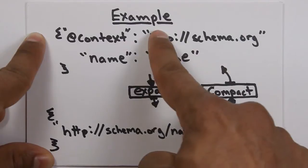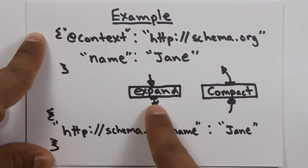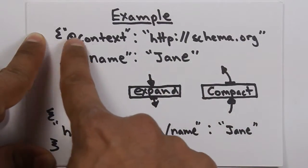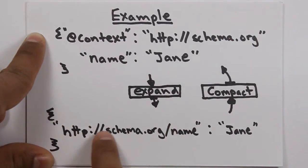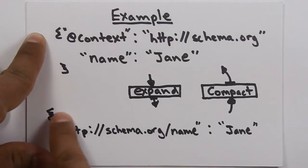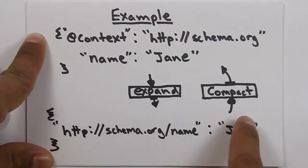If we take that and we send it through the expansion process, the expansion process will use this context to expand name out into this long identifier. So, this is what the machine ends up seeing, and this is great for a machine because it knows exactly what we mean by name.